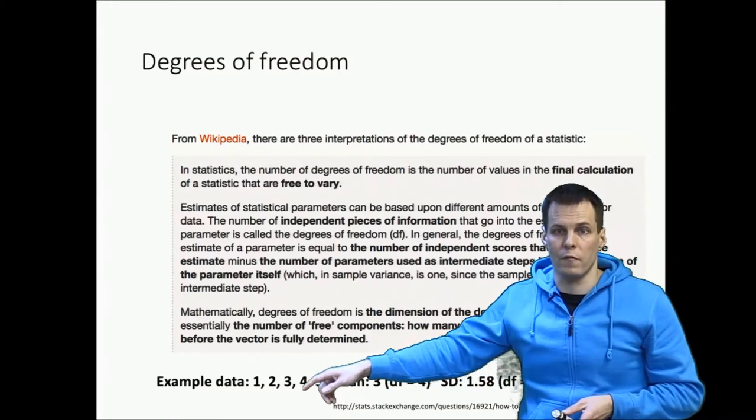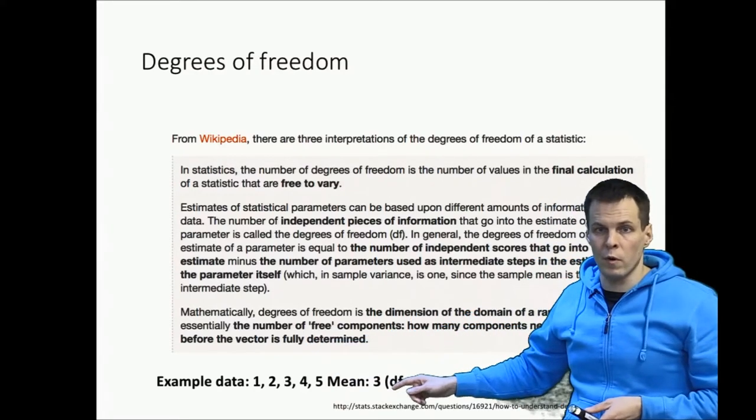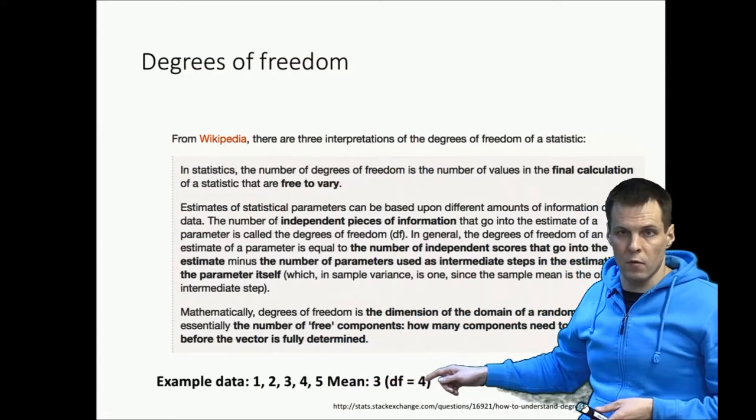So initially we have five units of information. We consume one unit by estimating the mean which leaves us four units.